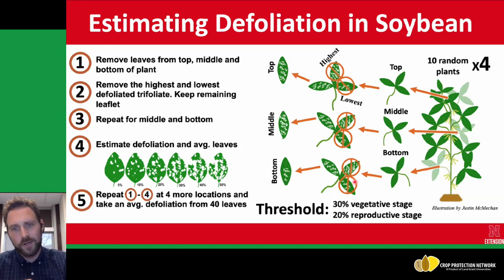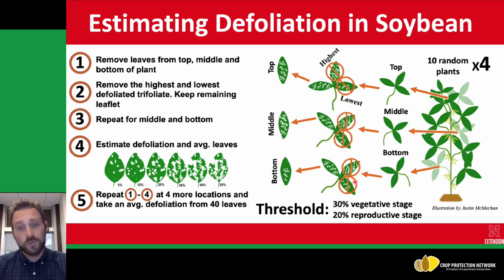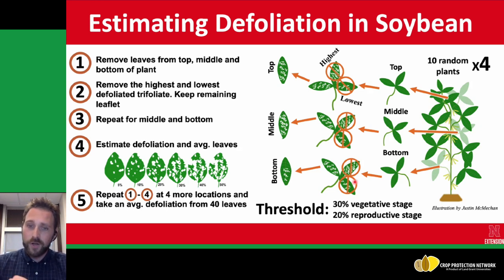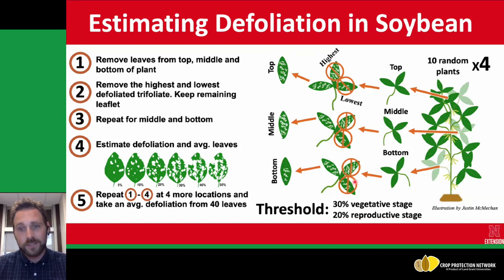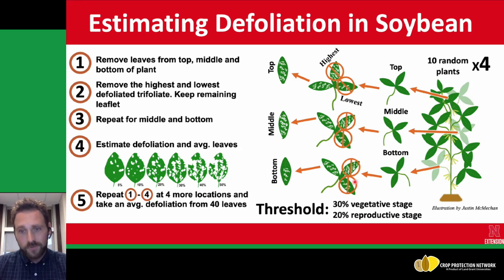The other important thing to point out as we bridge between the vegetative and reproductive stages of soybeans is the change in threshold — the amount of defoliation that needs to occur in order for a treatment to be applied. These are not hard numbers, so don't look at it as exactly 30%. It can vary 5 to 10% depending on the size of the soybean plants, how much leaf area is present, or the weather conditions that are coming up. But the guideline is 30% defoliation in the vegetative stages, then we lower that threshold to 20% in the reproductive stages of soybean.